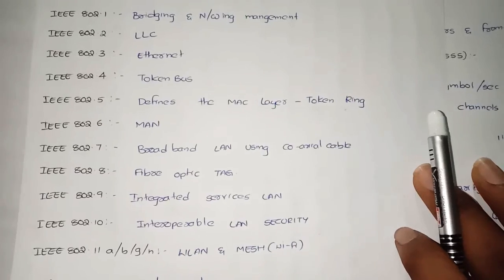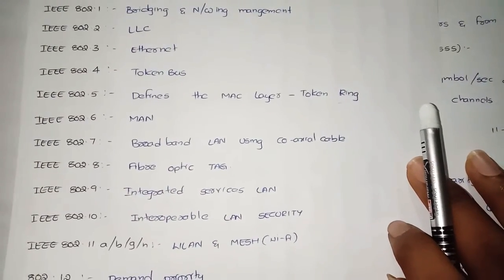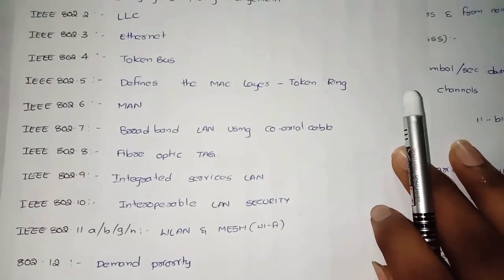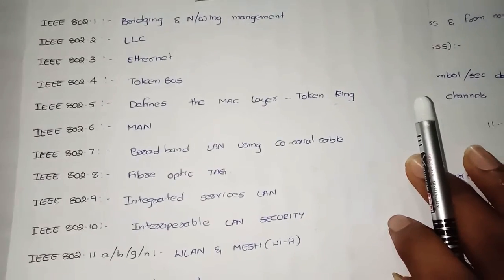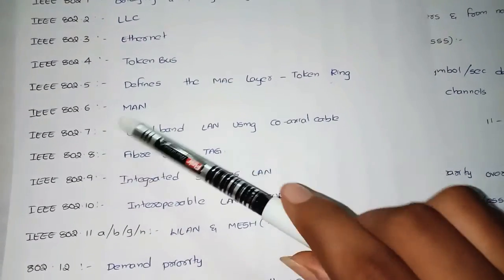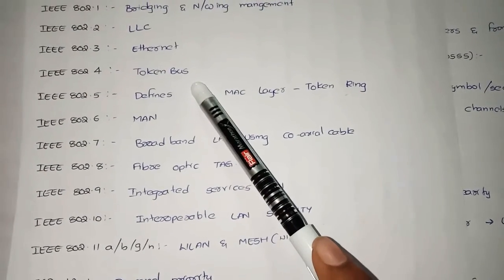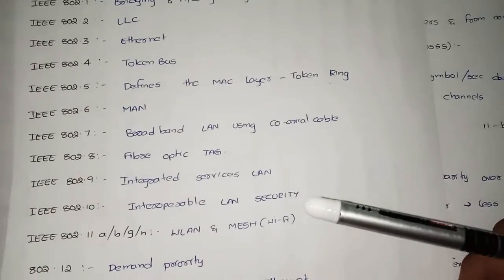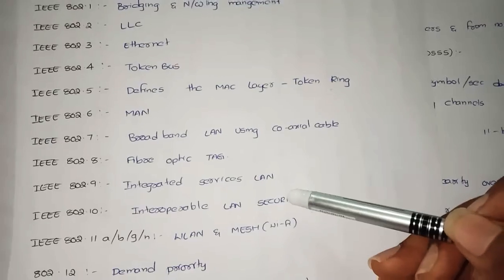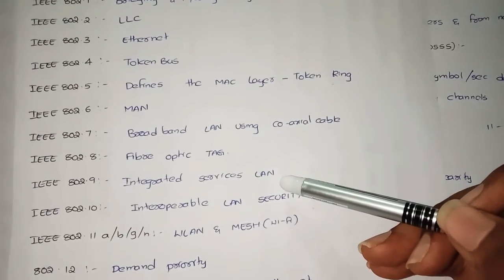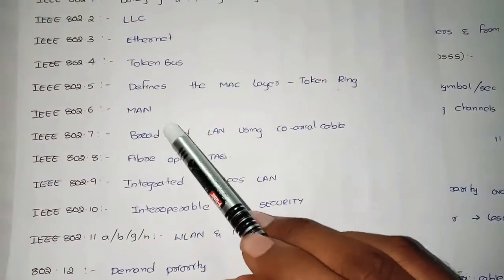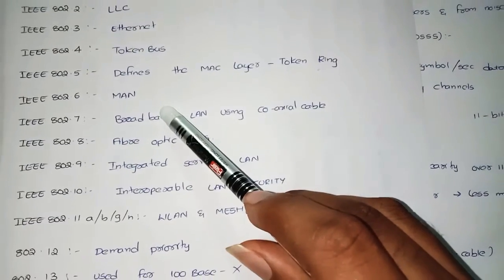IEEE 802.2 deals with LLC — logical link control — which is one of the sub-layers in the data link layer of the OSI model, and it also deals with LAN networks. IEEE 802.3 deals with Ethernet. IEEE 802.4 deals with token bus. IEEE 802.5 deals with token ring, which falls under the medium access control sub-layer.